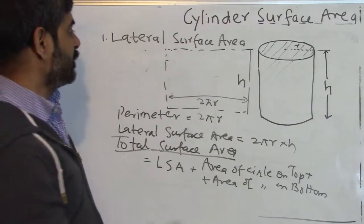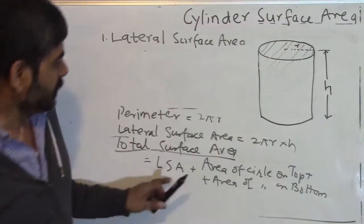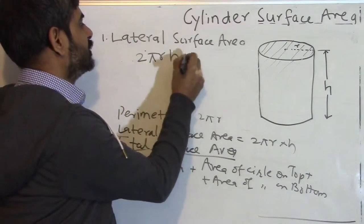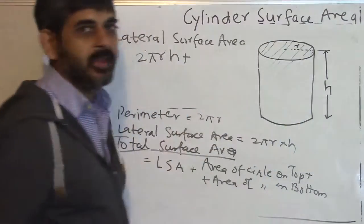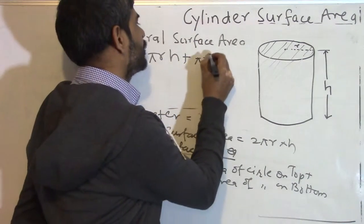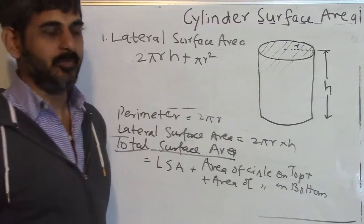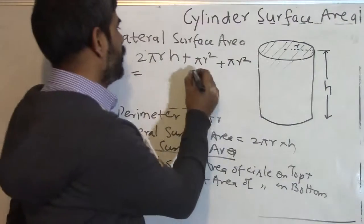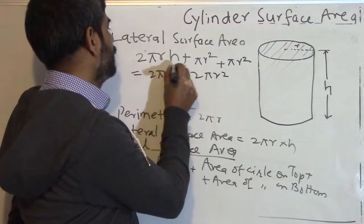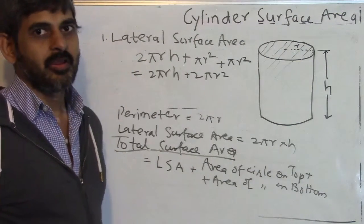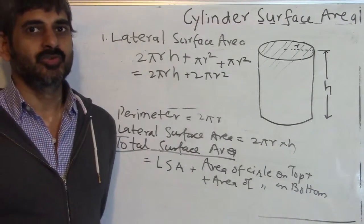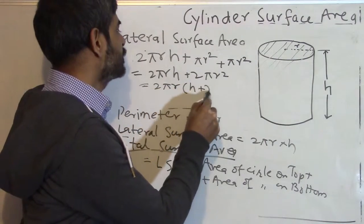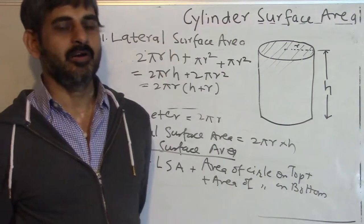The total surface area equals lateral surface area plus area of circle on top plus area of circle on bottom. The lateral surface area is 2πrh. The area of each circle is πr². So we have 2πrh + πr² + πr², and πr² + πr² becomes 2πr². Notice that 2πr is common in both terms, so we take it out: total surface area = 2πr(h + r).